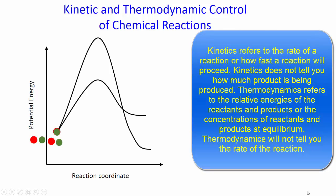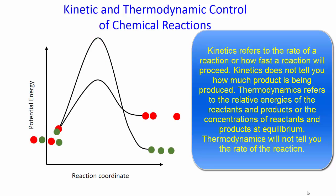Kinetic and thermodynamic control of chemical reactions. Kinetics refers to the rate of a reaction, or how fast a reaction will proceed. Kinetics does not tell you how much product is being produced. Thermodynamics refers to the relative energies of the reactants and products, or the concentrations of reactants and products at equilibrium. Thermodynamics will not tell you the rate of the reaction.